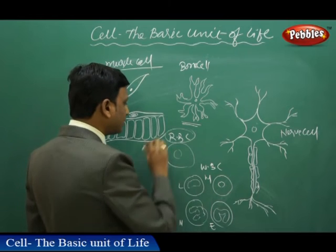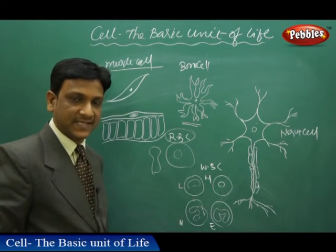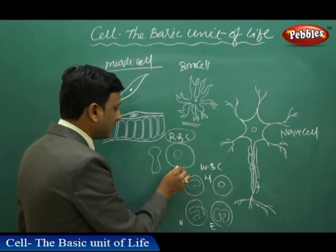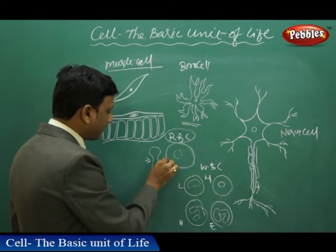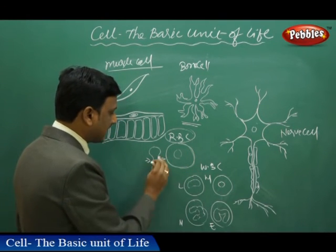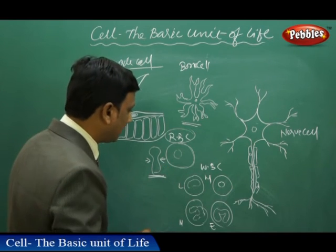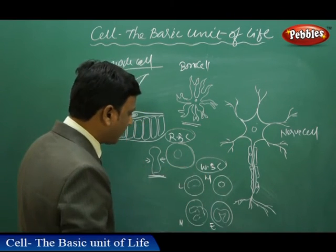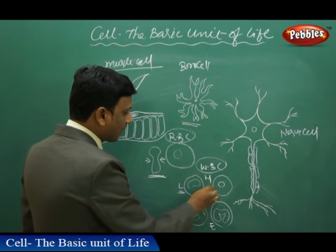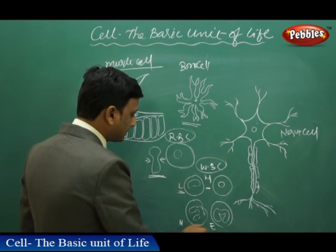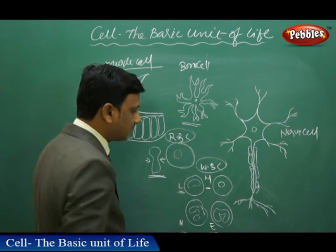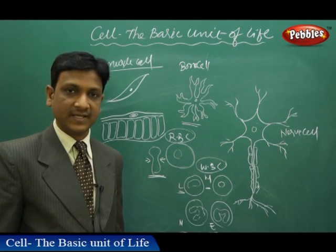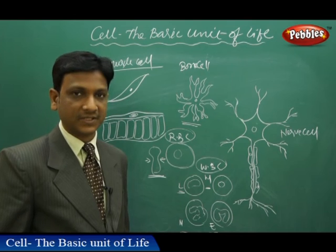We also see variation in our blood — different kinds of cells. Red blood cells: the red blood cell shape is like a disc, compressed on both sides. If you see the red blood cell from the side, it appears like this. And WBC — white blood cells — include lymphocytes, monocytes, neutrophils, eosinophils, and blood platelets. Likewise, there are different types of cells which vary in their structure and function.